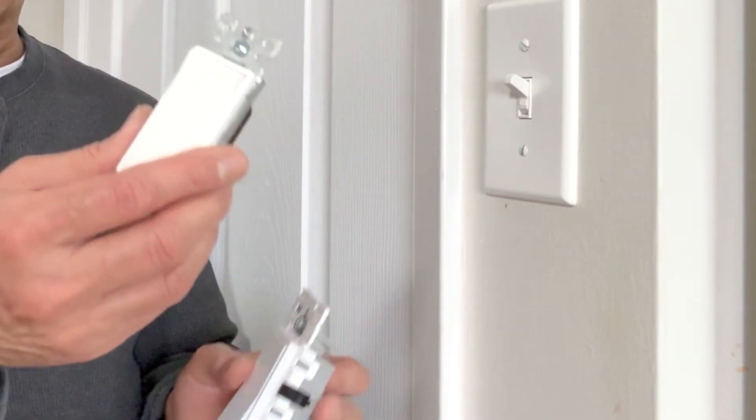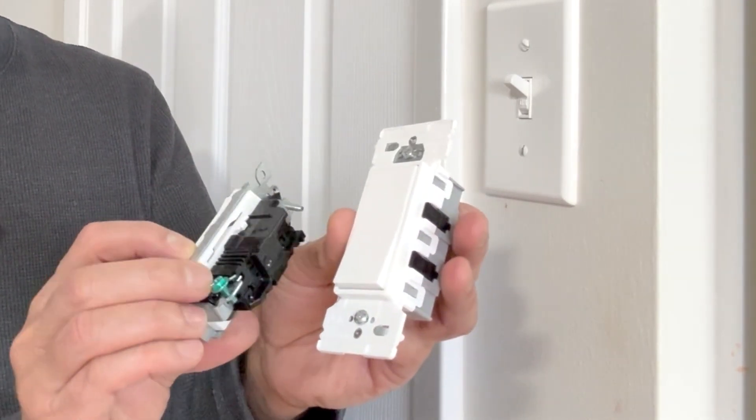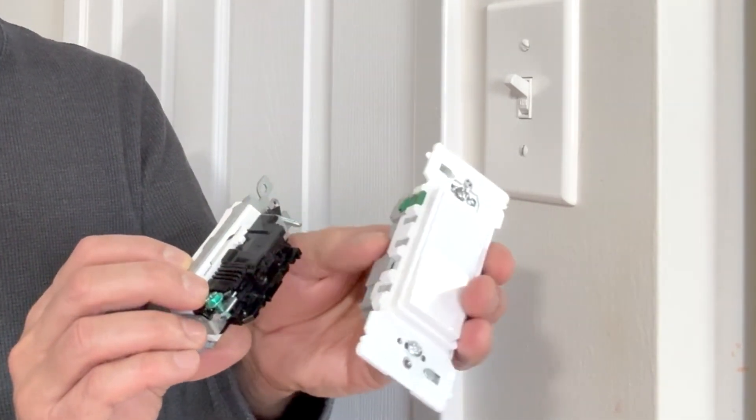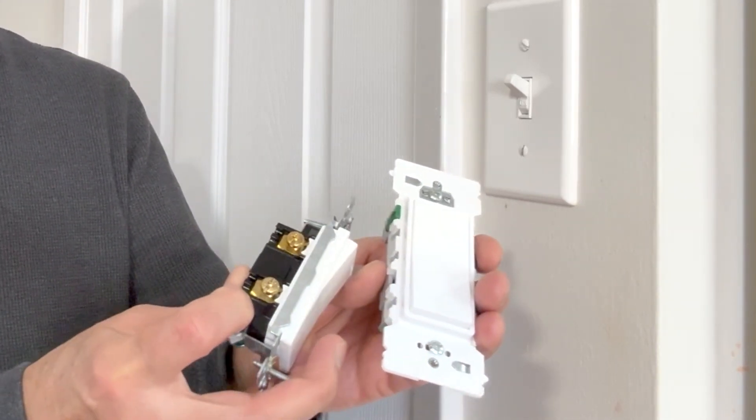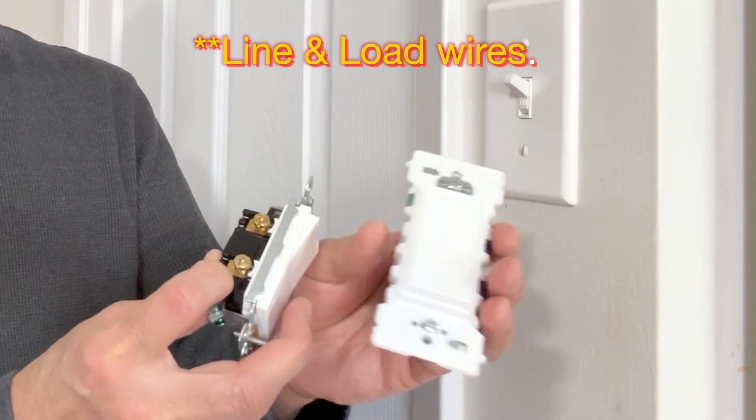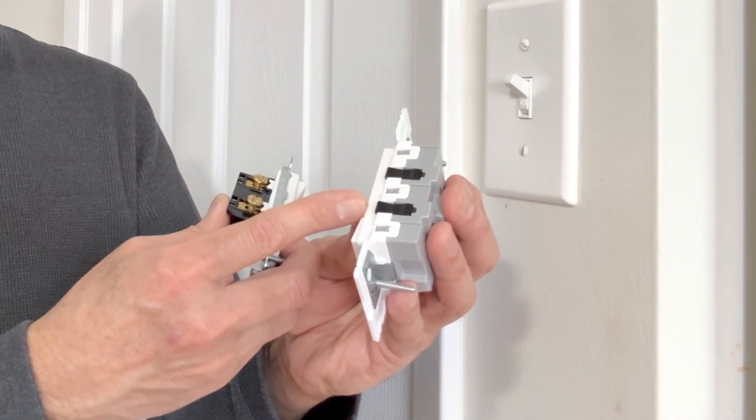If you want to compare this to the old one, the traditional Decora style, you can see this is the ground screw and we have the ground lever here. On the other side we have two brass screws for connecting the load wires and on this one we also have two black color coded push and click connectors.